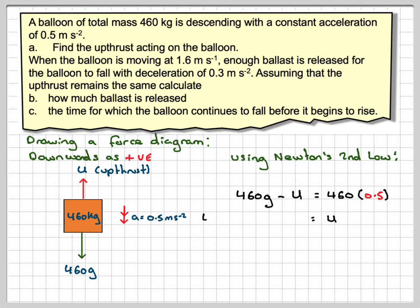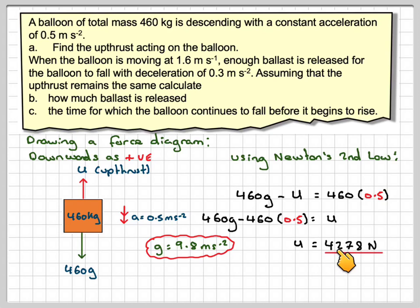So rearranging that, you're going to get that u is 460g minus 460 times 0.5. We take g to be 9.8 meters per second squared, so that will give a value of u as 4,278 newtons.